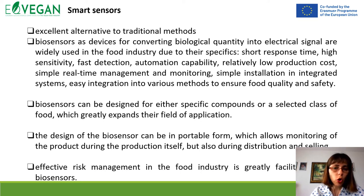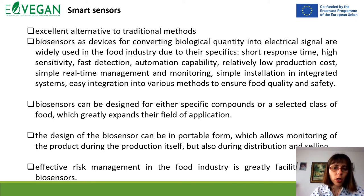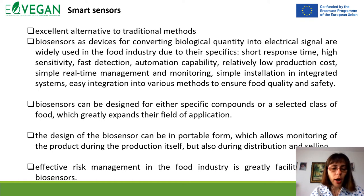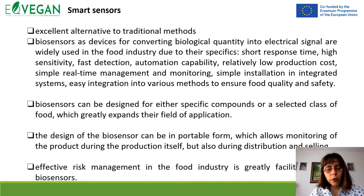Key properties of biosensors include short response time, high sensitivity, fast detection, automation capability, relatively low production costs, simple real-time management and monitoring, simple installation in integrated systems, and easy integration in various methods to ensure food quality and safety. There are different varieties of sensors that can be used in the food production line, especially in vegan food processing. Biosensors can be designed for either specific compounds or a selected class of food, which greatly expands their field of application.